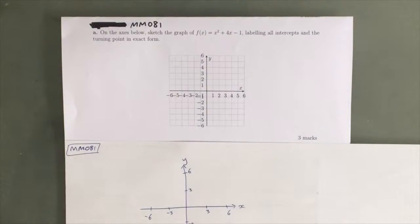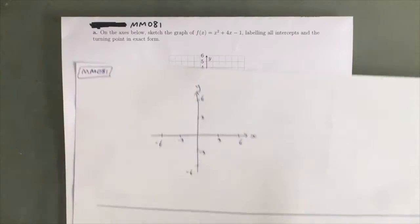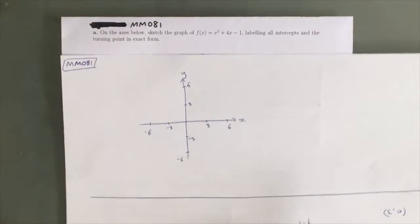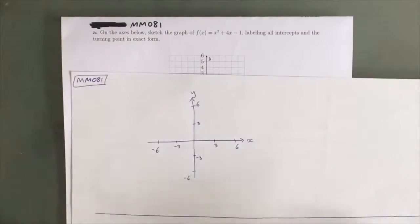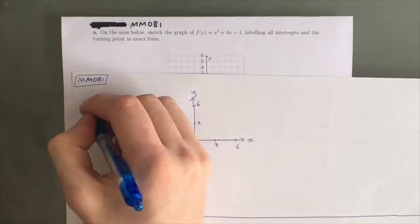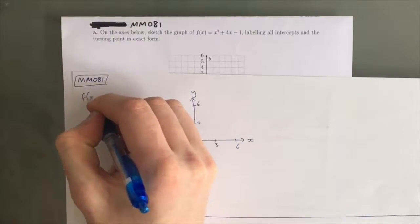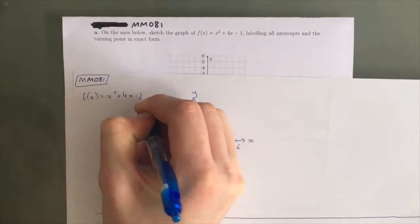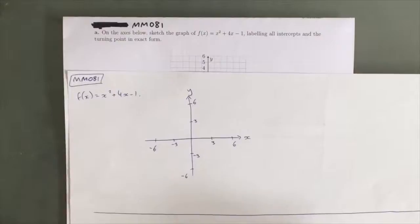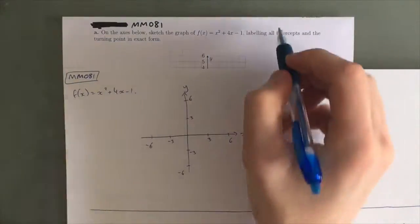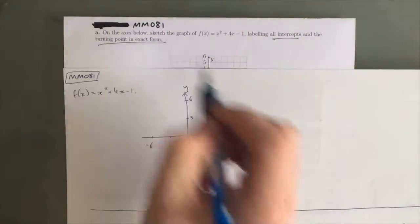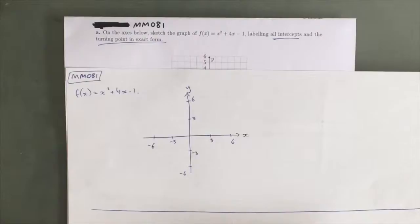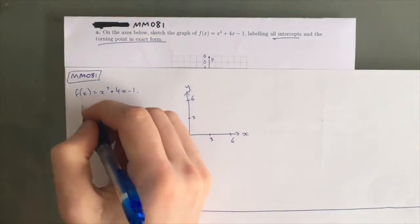There are a few different aspects to this. I've got my own axis here, just so I don't screw up the one that I've printed out. We've got f of x equals x squared plus 4x take 1, and what we need to do is find all intercepts and the turning point in exact form. So let's figure out the intercepts.